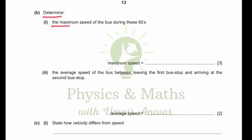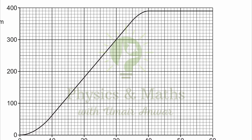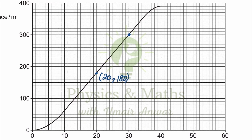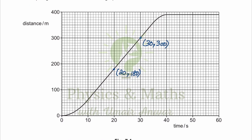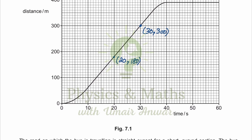The next part asks us to determine the maximum speed of the bus during these 60 seconds. The maximum speed is shown by the maximum gradient, which occurs during the straight-line portion of the graph. To find the maximum speed, we consider two points on this line — for example, the point with coordinates (20, 180) and the point with coordinates (30, 300) — and find the gradient of the line between them.